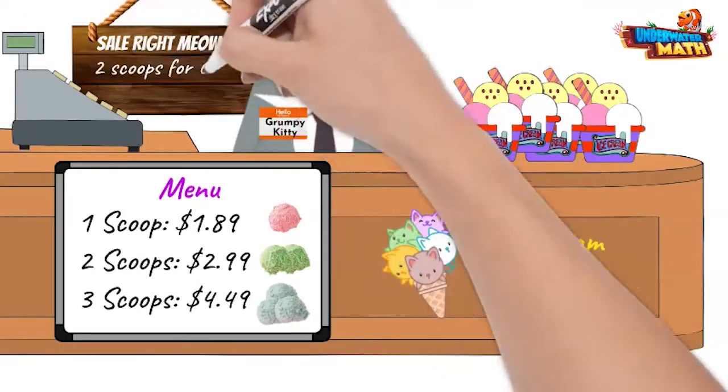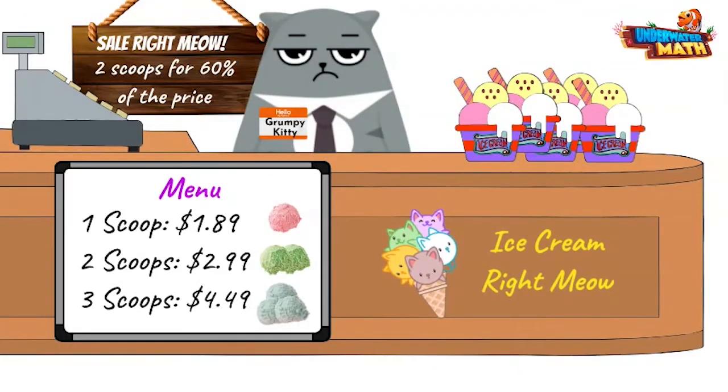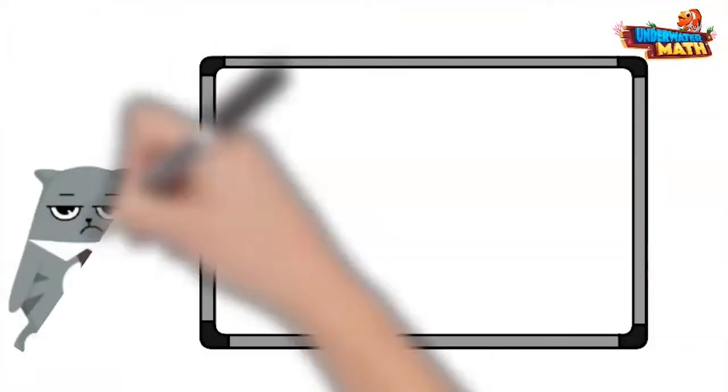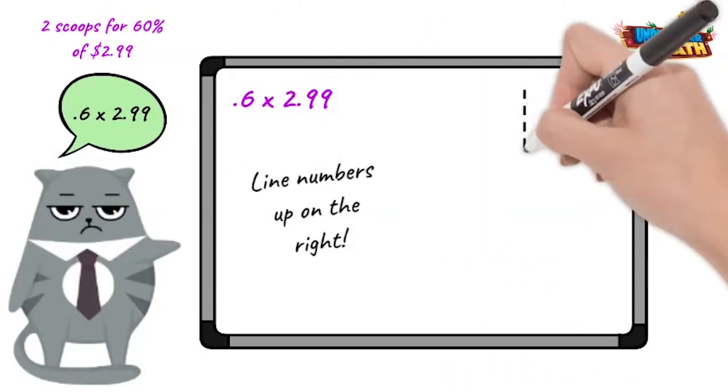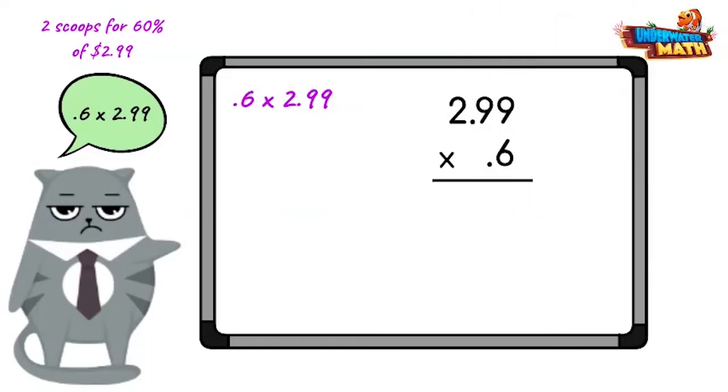I will also take two scoops for 60% of the price please. Unbelievable. The standard algorithm sure comes in handy here. 60% of a price is the same as multiplying it by 0.6. I got this. Line up the numbers on the right and multiply like normal. Six times nine is 54, and we carry the five. Then six times nine plus five is 59, and we carry another five. Finally, six times two plus five is 17.